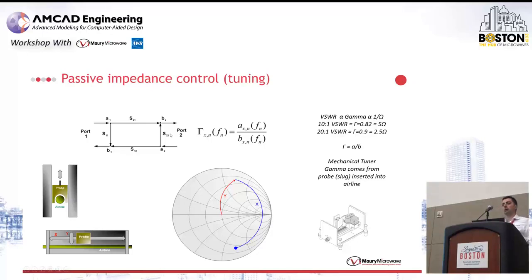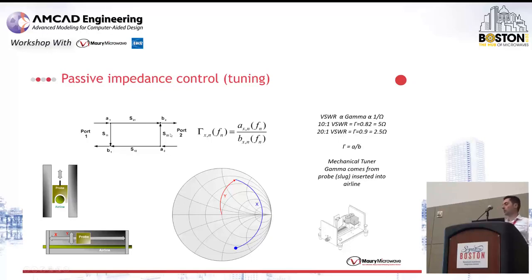Mechanical tuners are quite nice because they're simple to use, robust, and can handle very high powers. They do have limitations — specifically, it's a passive instrument, so the A wave coming back onto your device under test will always be lower than the B wave. This means you cannot cover the whole Smith chart, which is especially important with very large devices. They can also be rather slow because they must move mechanically with a motor for every single impedance.